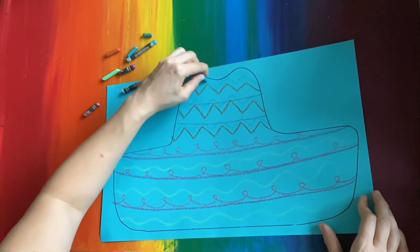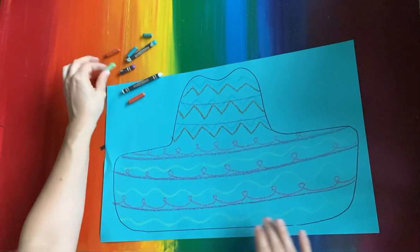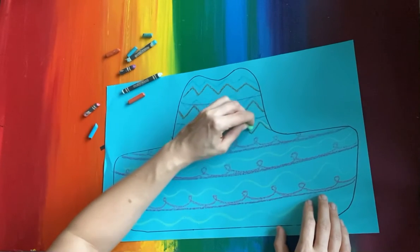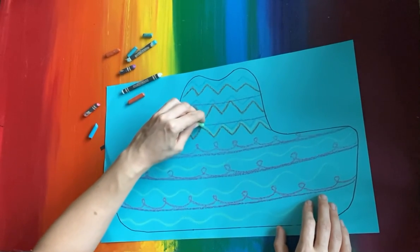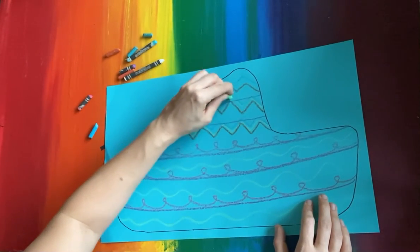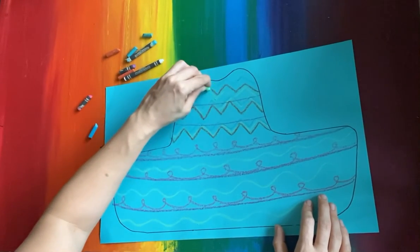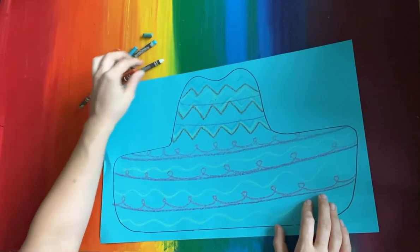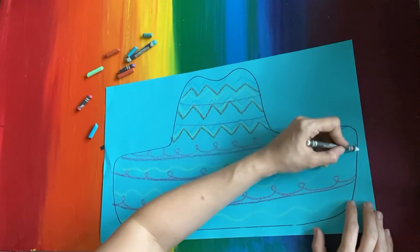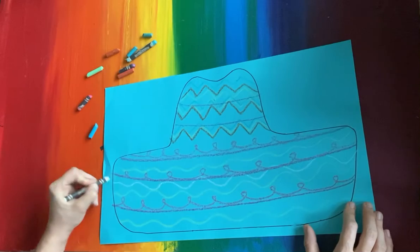We can layer our lines, so we're gonna fill this whole hat with all different lines, right on top of each other. Layering, layering, layering all the lines. You can do patterns. Let's see what the white crayon looks like - oh, that shows up nice! I'm gonna do more wavy lines.